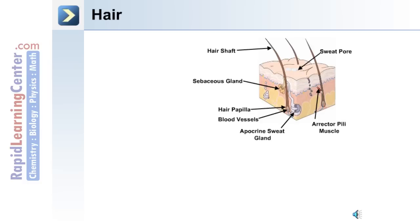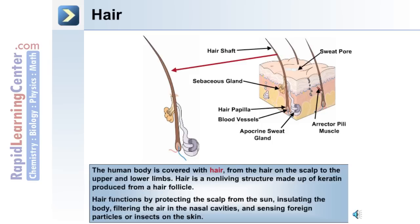The first derivative or accessory structure we'll discuss is the hair. The hair is made up of a hair follicle, a hair papilla at the base, and a hair shaft. The human body is covered with hair, from the hair on the scalp to the upper and lower limbs. Hair is a non-living structure made up of keratin produced from a hair follicle. The functions of hair include protecting the scalp from the sun, insulating the body, filtering the air entering the nasal cavities, and sensing foreign particles or insects on the surface of the skin.